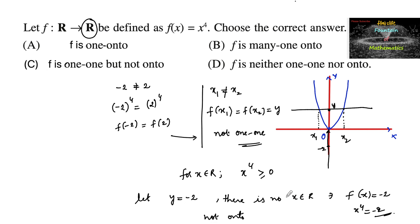So this function is neither one-to-one nor onto. We can go with option D.